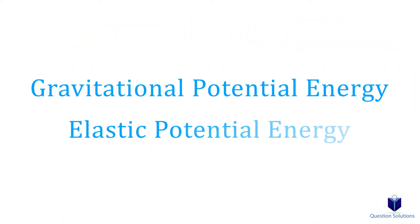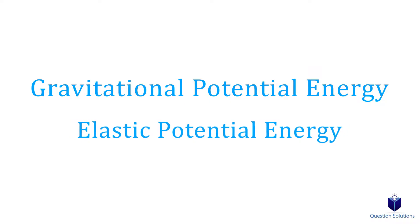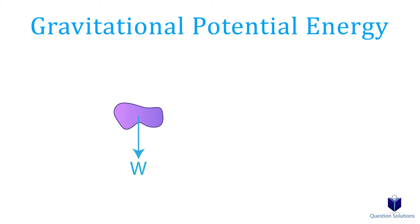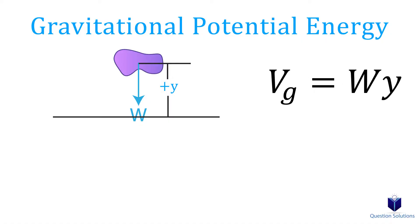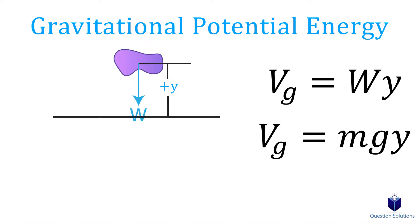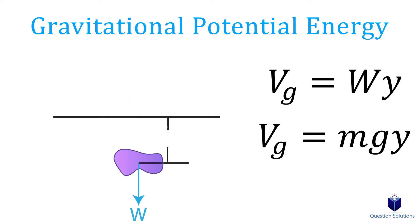We will talk about two types of potential energy: gravitational potential energy and elastic potential energy. Let's draw a datum through the center of an object. If we move the object upwards, the displacement is positive, and we can figure out the potential energy by multiplying the weight times the displacement — or equivalently, mass times acceleration due to gravity. If the object moves below the datum, the displacement is negative, because weight must do work to bring the object back to the datum.